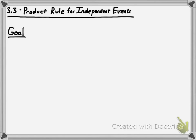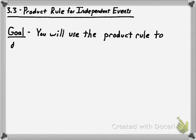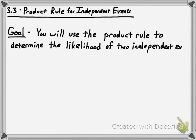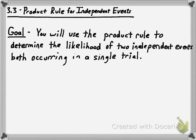All right, good day everybody. We are going to work today on some probability — in particular, probability involving independent events and the product rule that can be used along with independent events. The goal is that you're going to be able to use the product rule to determine the likelihood of two independent events both occurring in a single trial of an experiment.